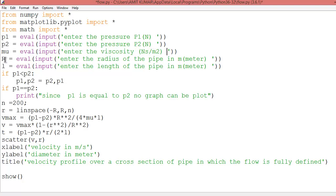R is basically the diameter of the pipe in which the fluid is going to flow. So you will enter here the diameter of the pipe in meter.